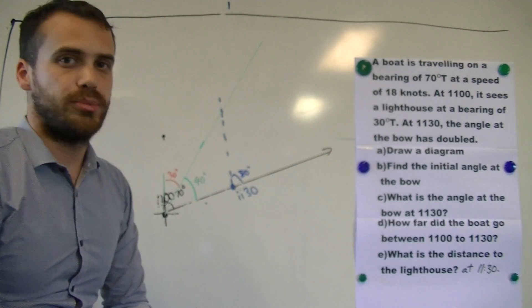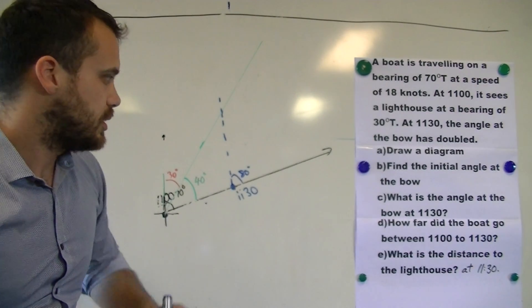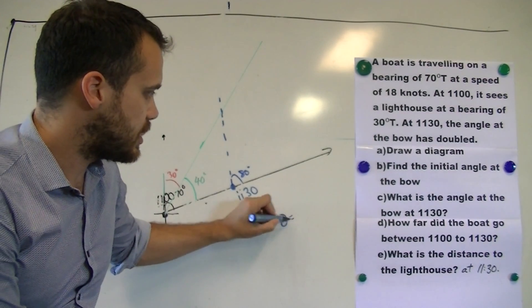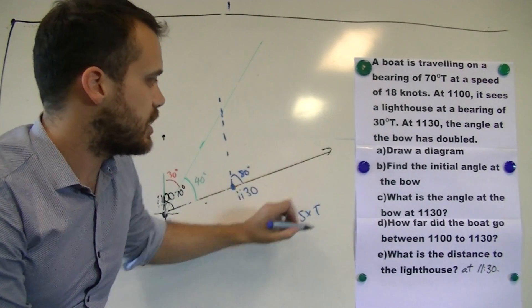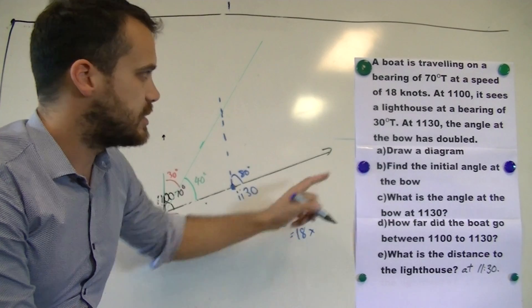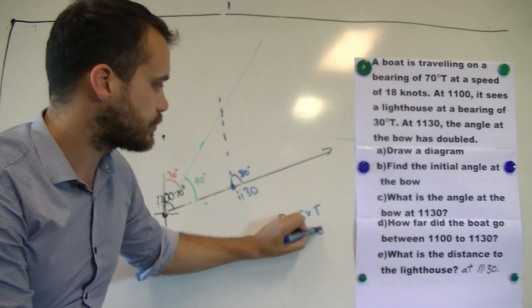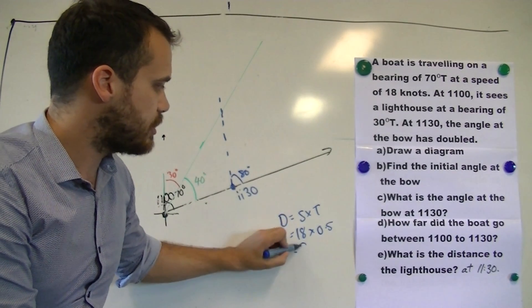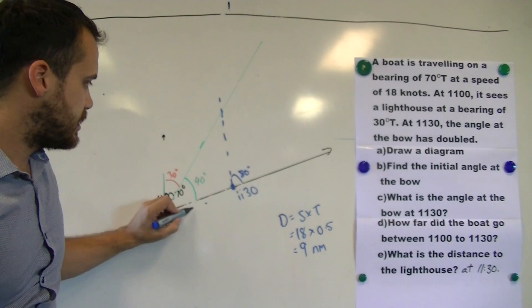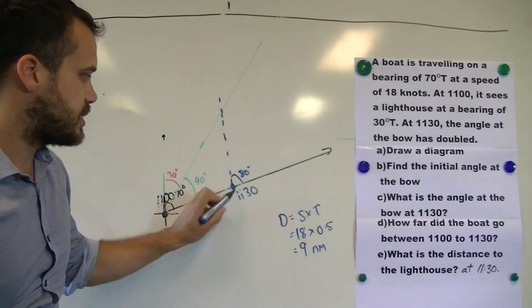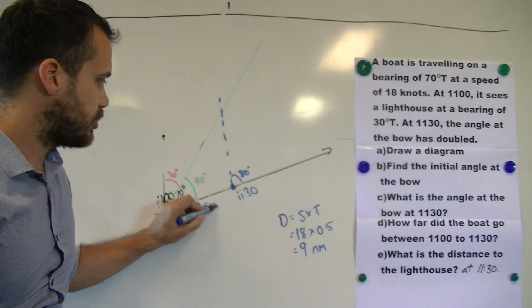Now it says, how far did the boat go between 11 to 11:30? Remember the distance equals speed times time. It was travelling at a speed of 18 knots, and it did it for half an hour. So that means it's gone 9 nautical miles in that half an hour. That means that that distance from where we initially started to here is 9 nautical miles.